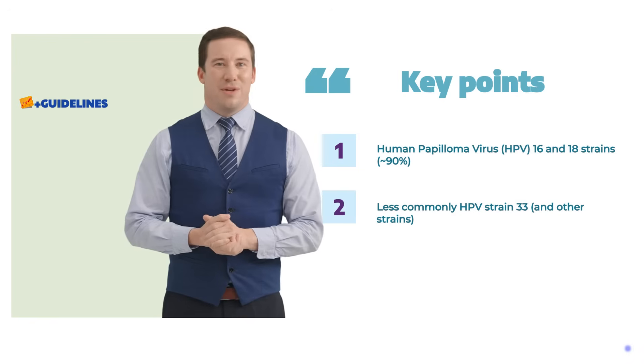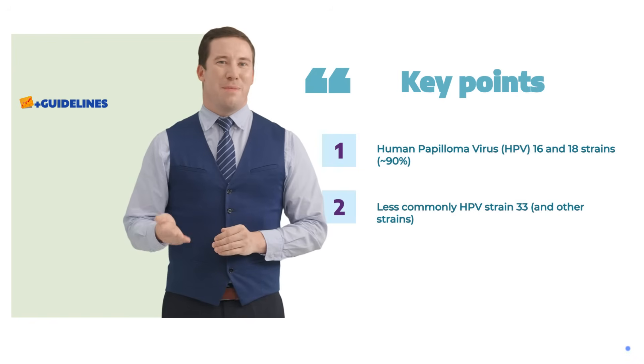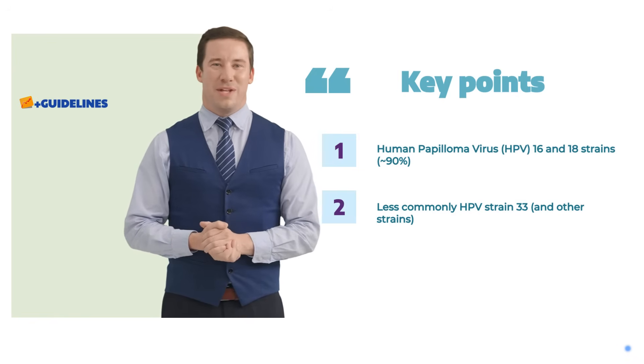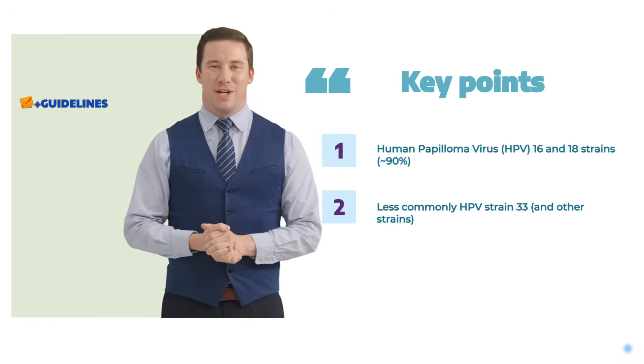Which HPV subtypes are associated with anal cancer? Anal cancer is associated with subtypes 16 and 18, and less commonly subtype 33.